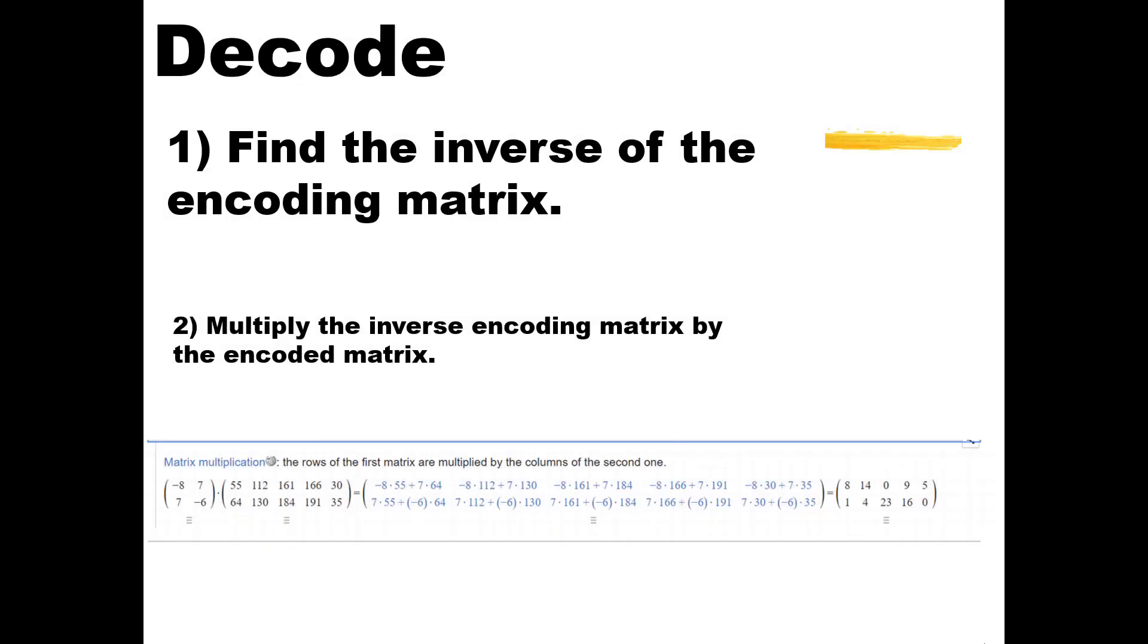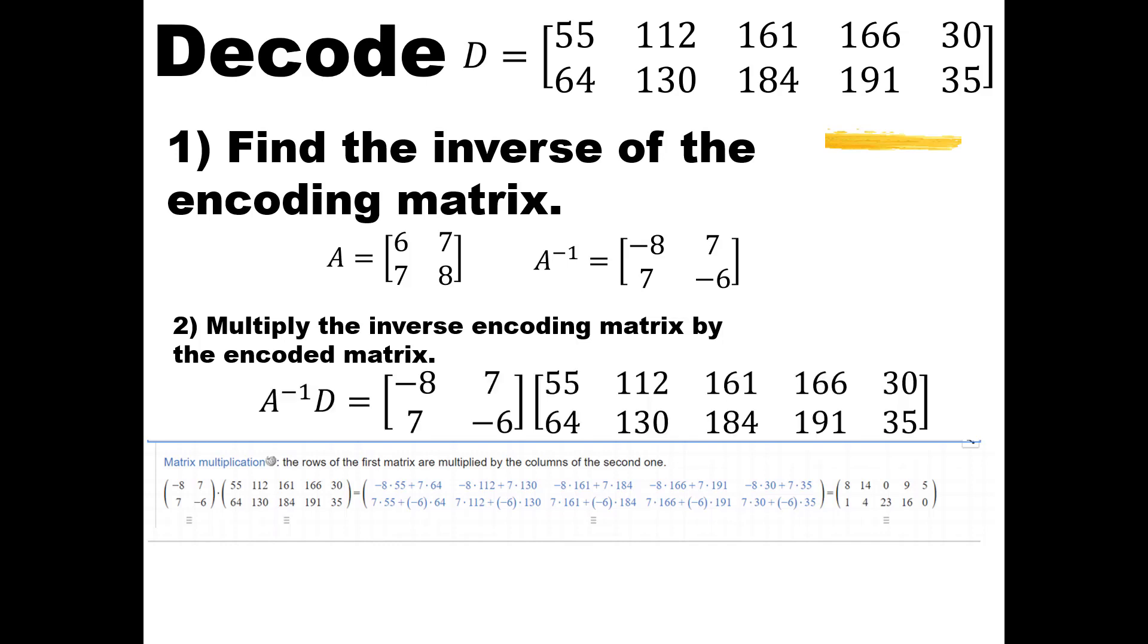Now we just got a message from our friend and we need to decode it. So the first thing is we have to find the inverse of the encoding matrix. For this one I have 6, 7, 7, 8 as my matrix, and the inverse is negative 8, 7, 7, negative 6. That's D, that's our secret message we just got from a friend. Now we need to multiply the inverse encoding matrix by the encoded matrix. We're just taking A inverse times the message we just got. When I do that, I end up with B, my answer. I use matrixcalc.org to do all this stuff, and this is our matrix B.